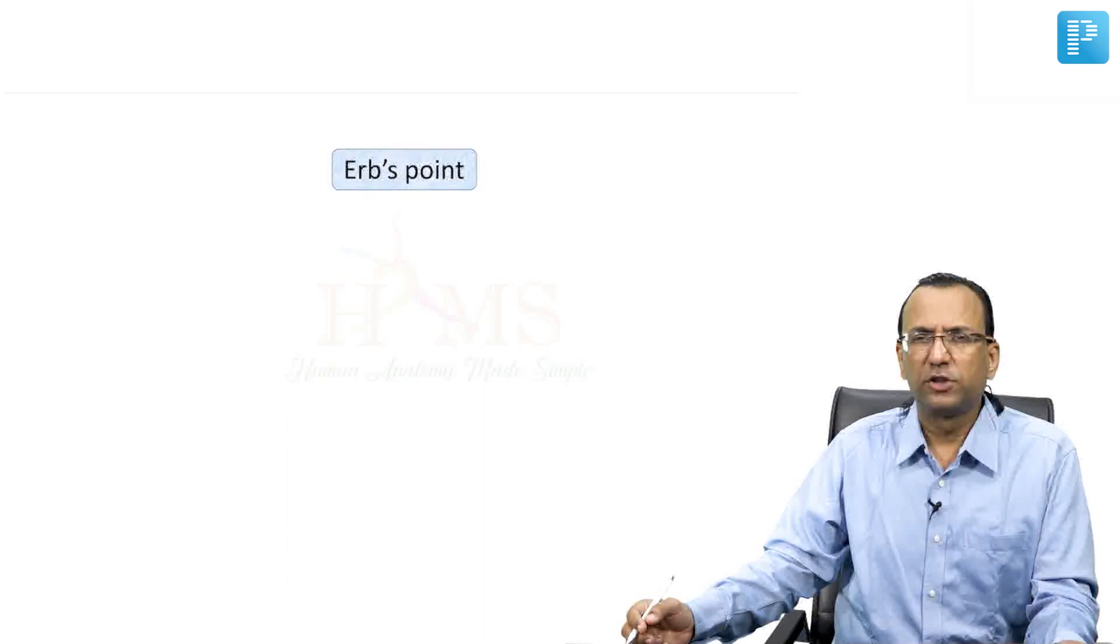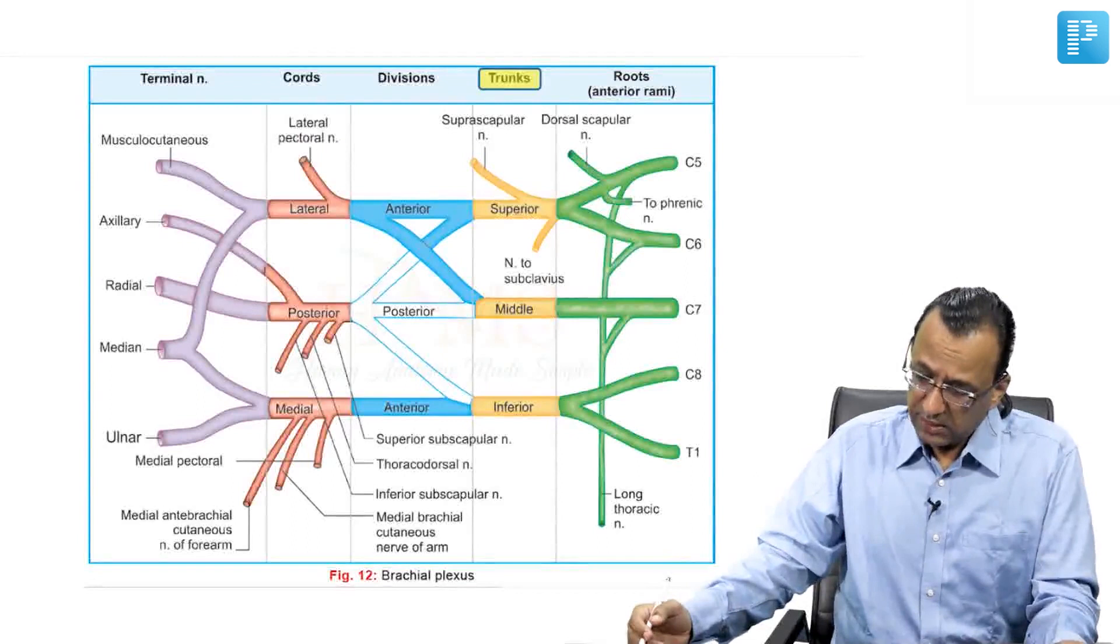What about Erb's Point? There is a question on Erb's Point. It is a meeting of six nerves. So which six nerves are meeting? Let us discuss.